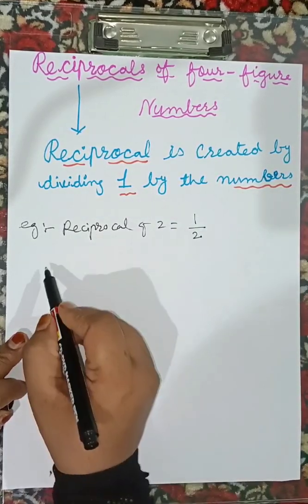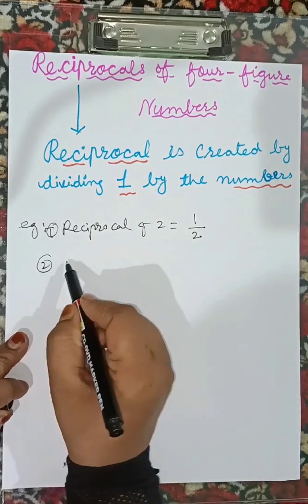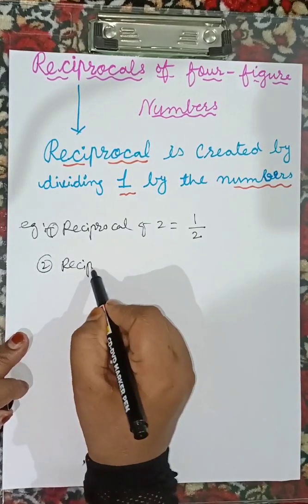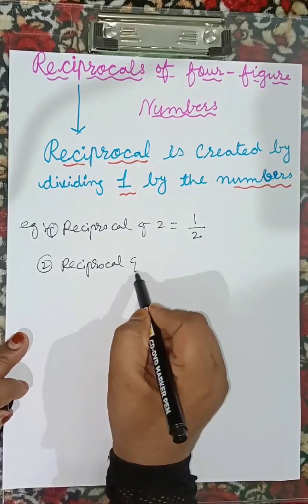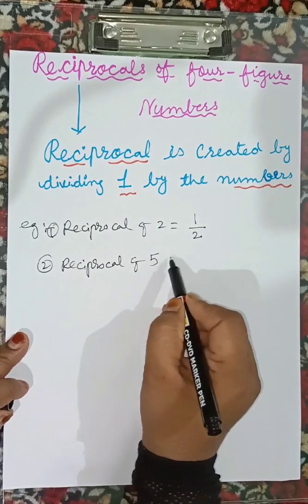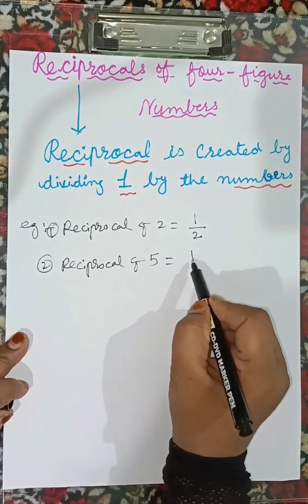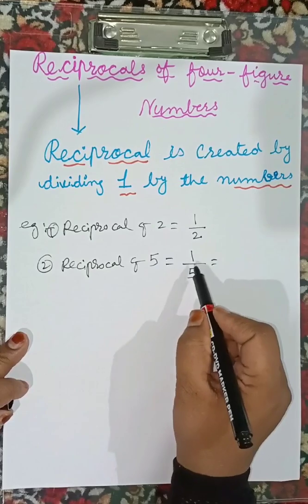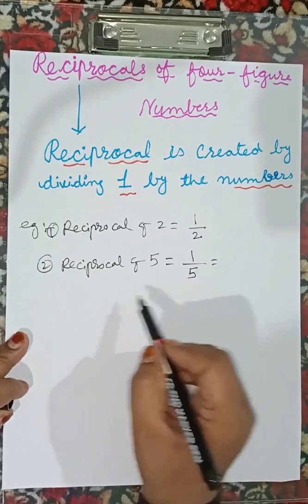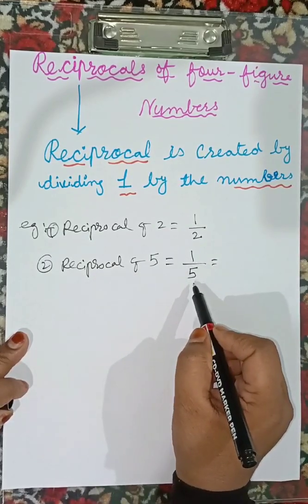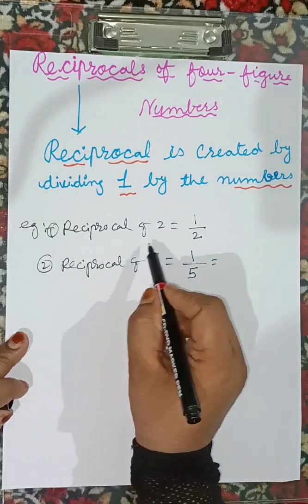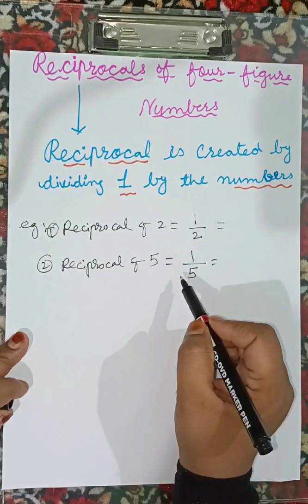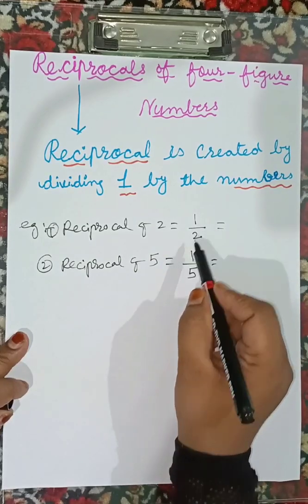For example, the reciprocal of two means one divided by two. The reciprocal of five means one divided by five, which is one-fifth. So the reciprocal of two is one-half, and the reciprocal of five is one-fifth.